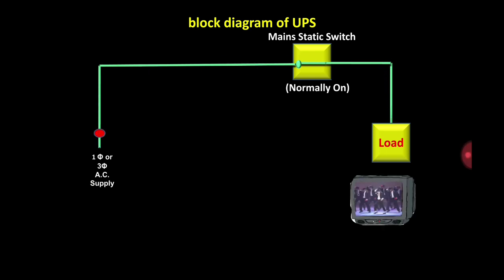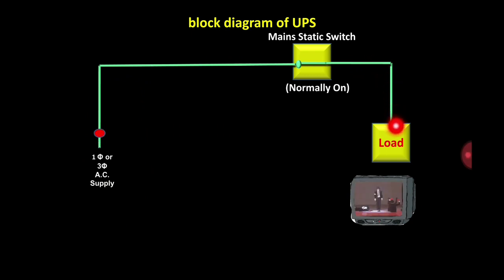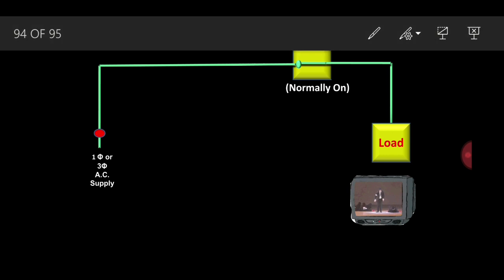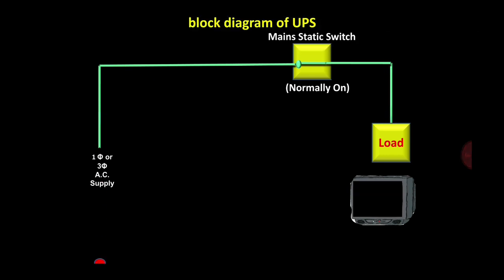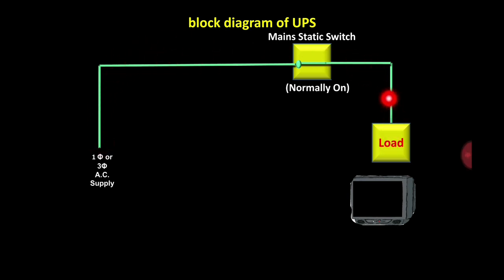For example, if we take a television — our television is on because it is receiving supply from the main switch. But if for any reason the main supply is not available, our load can get switched off because it is not receiving supply. This should not happen, and that's why we have to make an arrangement.